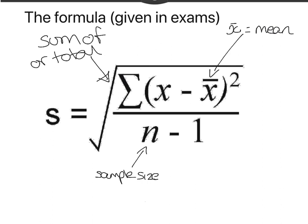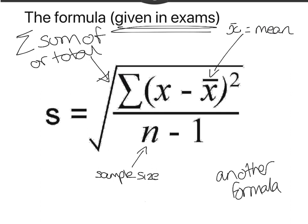So if we have seven numbers in our list, n minus one would be six. The actual Greek letter for this is called sigma. That is the formula, and as I've stressed, it is given to you in exams. You don't need to memorize it. There is another formula but I'm not going to teach you that one.